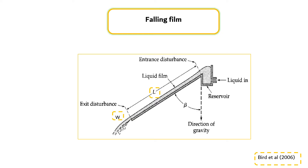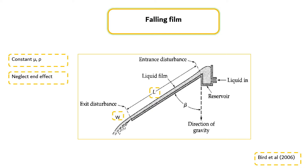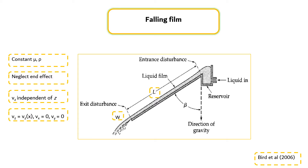Let's consider the viscosity and density of the fluid to be constant. We assume that disturbance at the edges of the system is negligible, especially when W and L are large compared to the film thickness. For smooth flow rates, we expect that the viscous force will prevent continued acceleration of the liquid down the wall, so that Vz will become independent of z in a short distance down the plate. Therefore, it seems reasonable to postulate that Vz equals Vz as a function of x, Vx equals 0, and Vy equals 0.